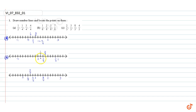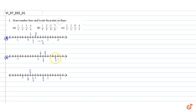1 by 8 represents 1/8 of the gap between 0 and 1 — that is this point. 2 by 8 represents 1/4 of the gap between 0 and 1 — that is here. 3 by 8 represents 3/8 of the gap between 0 and 1 — that is here. 7 by 8 represents 7/8 of the gap between 0 and 1 — that is here.